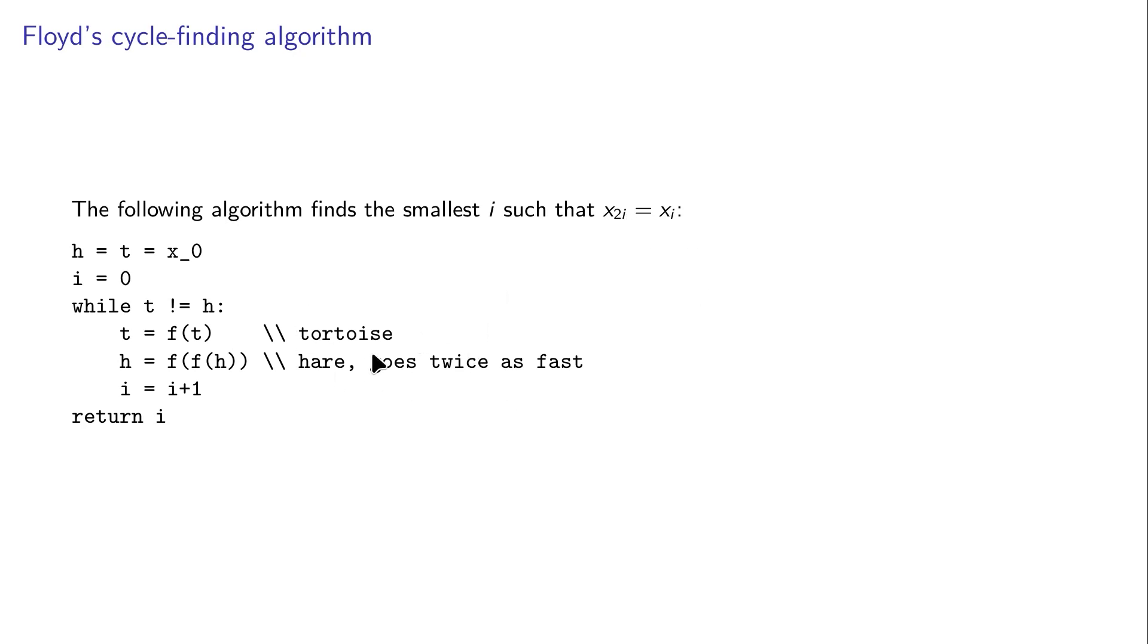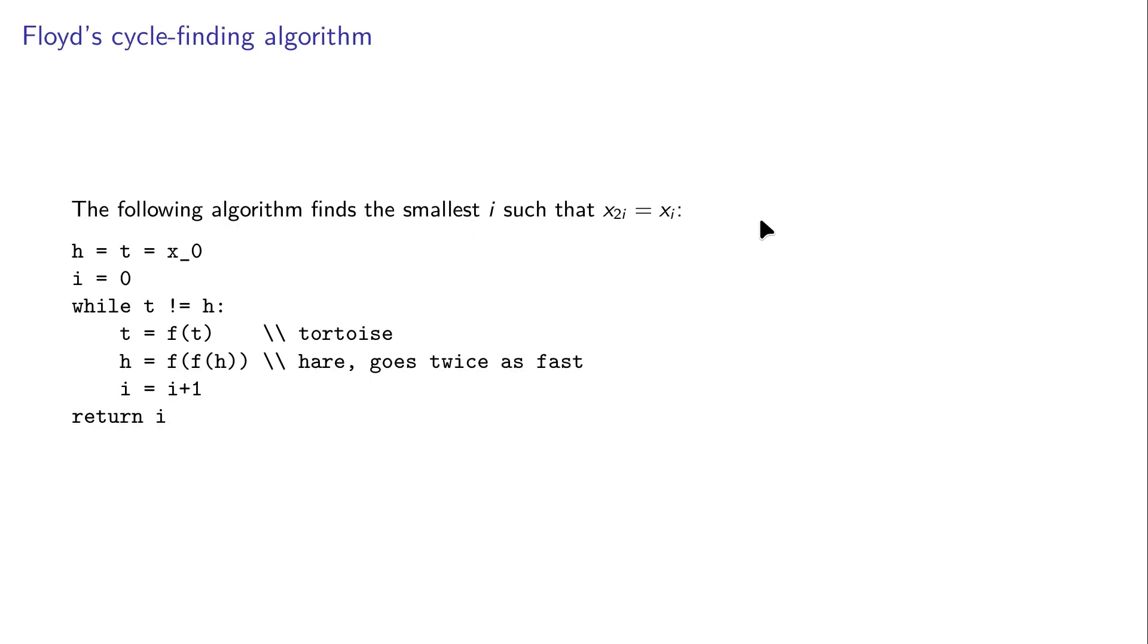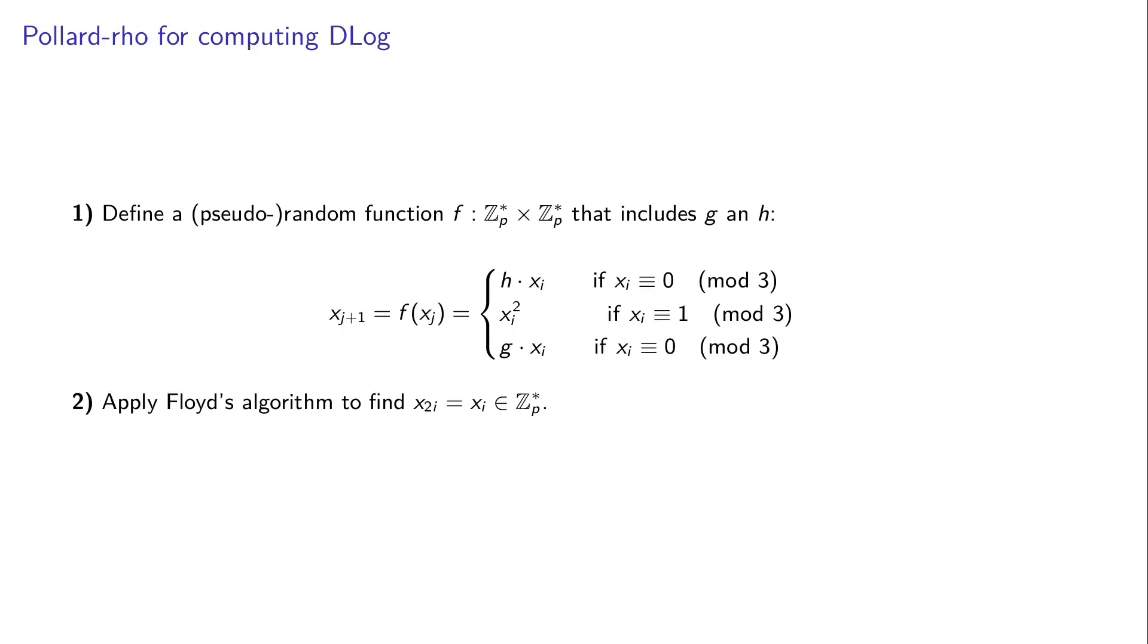We can make an algorithm to discover the smallest i such that x_{2i} equals x_i. This is called the hare and the tortoise. The hare goes twice as fast as the tortoise, so when the tortoise enters the cycle, the hare will catch up from behind. This is Floyd's cycle finding algorithm.